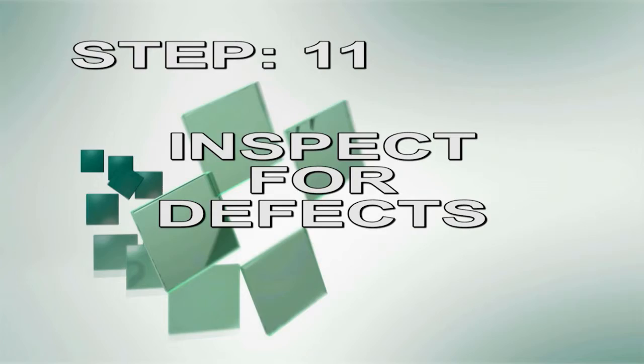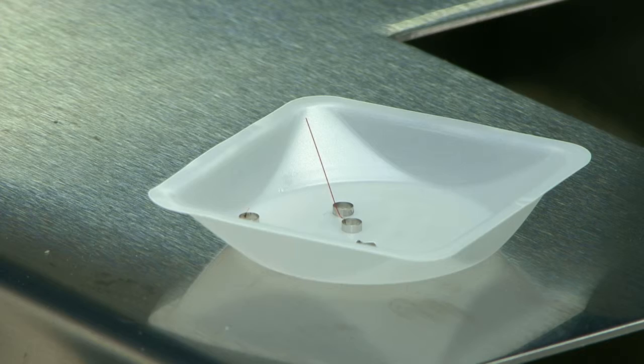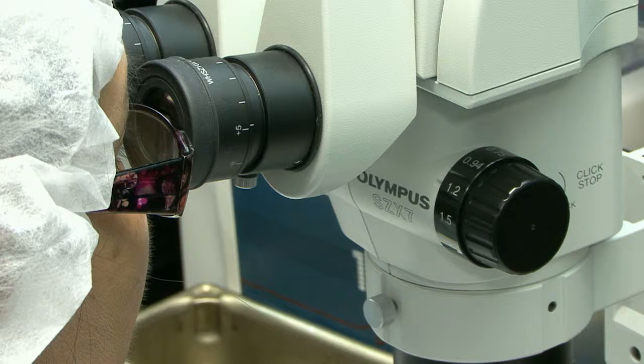Step 11. Inspect for defects. Now it's time to inspect your work. Scrap the piece if you see defects. For the visual inspection, set the microscope magnification dial to 1.2.